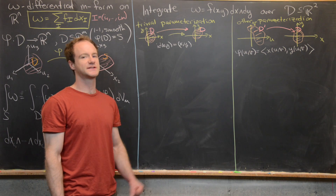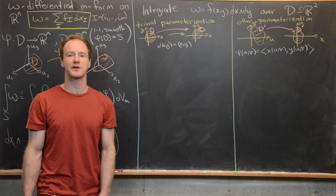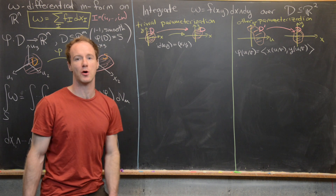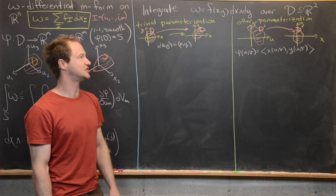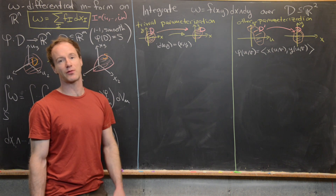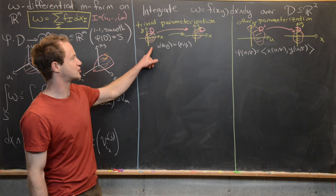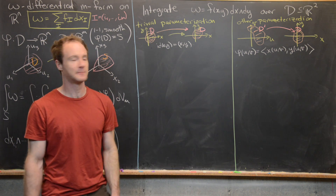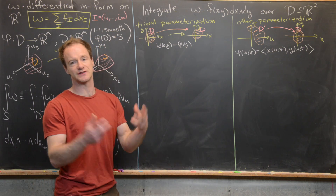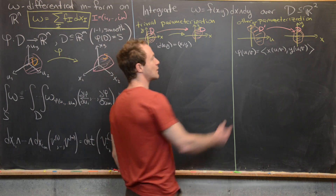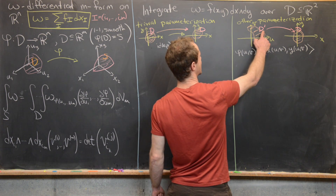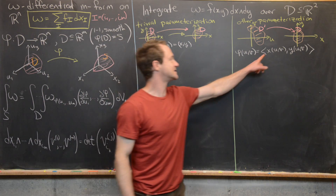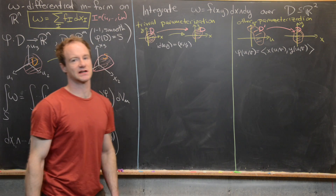Our goal is to look more deeply into the change of variables formula for double integrals. We'll do that by integrating the differential two-form omega = f(x,y) dx wedge dy over a region D of the plane in two different ways. First with the trivial parametrization taking a point (x,y) to (x,y), and then with another parametrization phi mapping a region D' in the UV plane to D, with component functions x(u,v) and y(u,v).